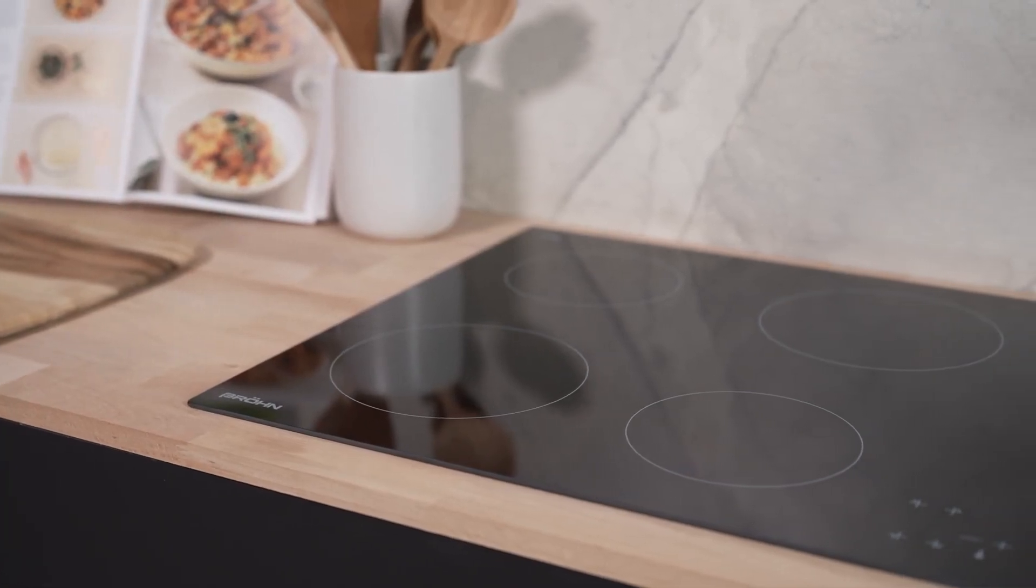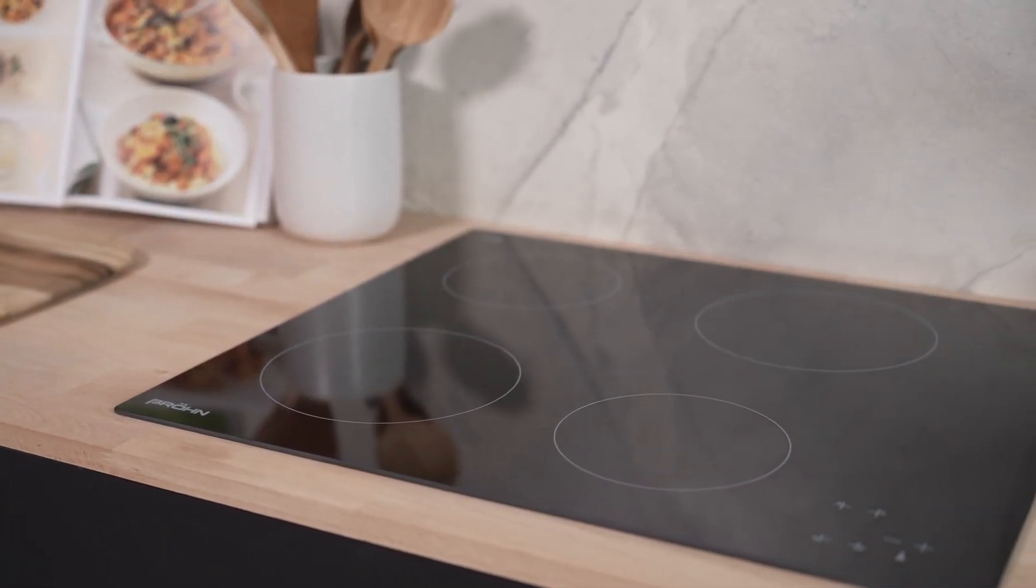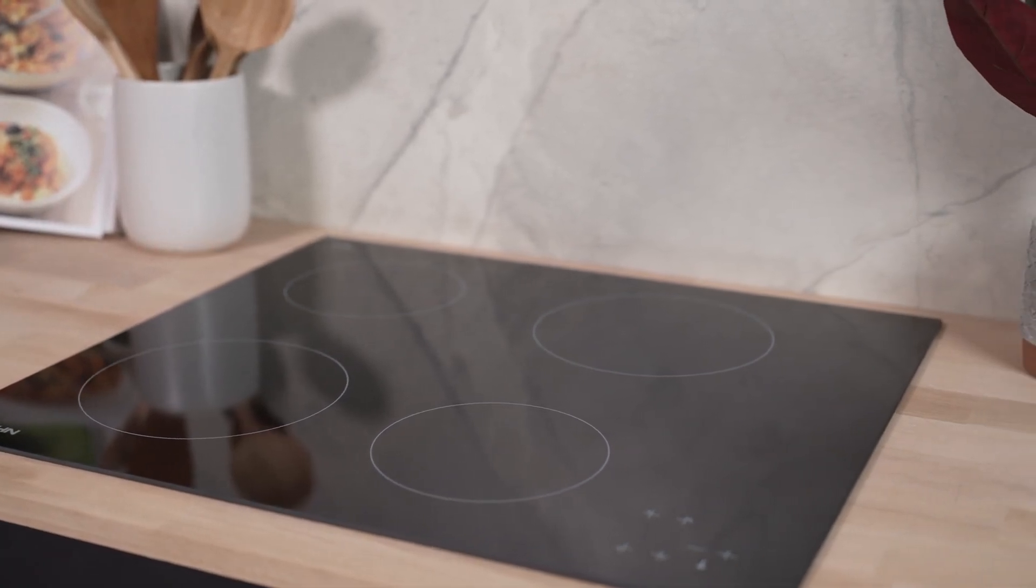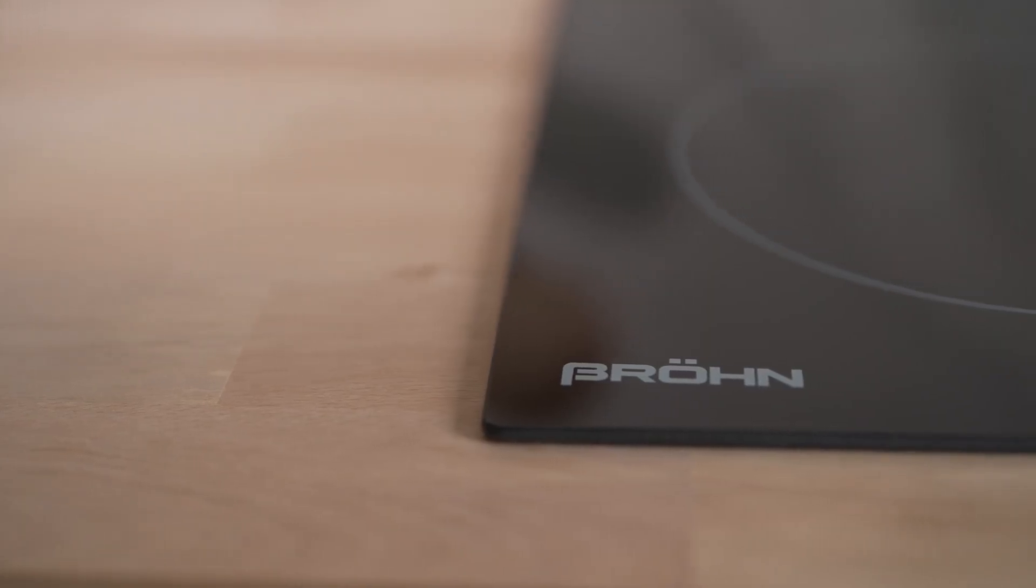Introducing the Browne 60cm Eurokira Ceramic Cooktop. This sleek and stylish cooktop is designed to elevate your cooking experience with its advanced features and modern design.